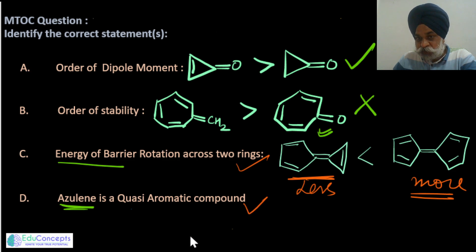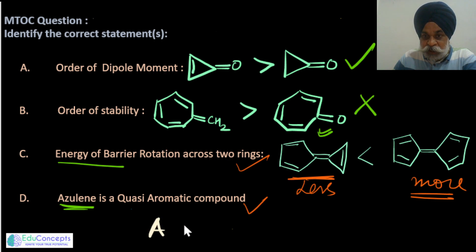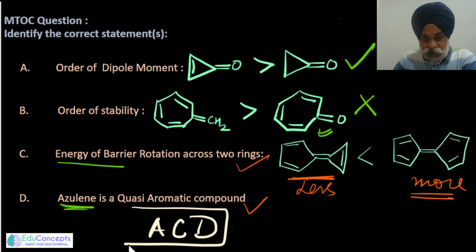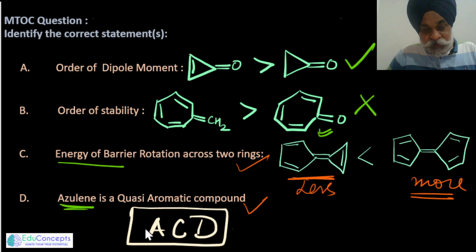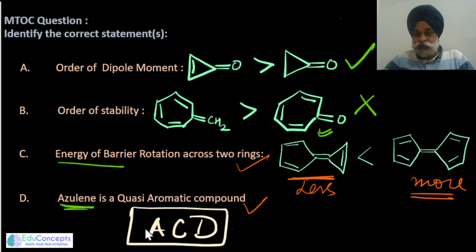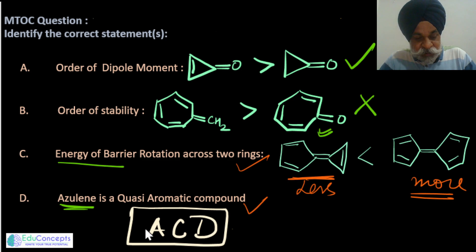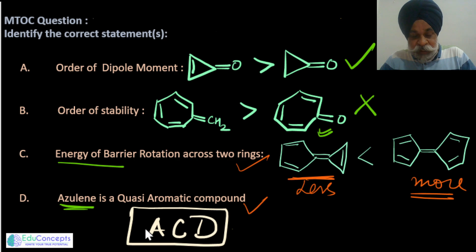So the answer to this question: option A (dipole moment order) is correct, option B (stability order) is wrong, option C (energy of barrier rotation is less for the first compound) is correct, and option D (azulene is quasi-aromatic) is also correct. IIT JEE questions check many concepts in a single question. Hope to see you in the next video for more IIT Advanced problem solving. Thanks a lot, have a nice day — if you like the video, do share and subscribe.